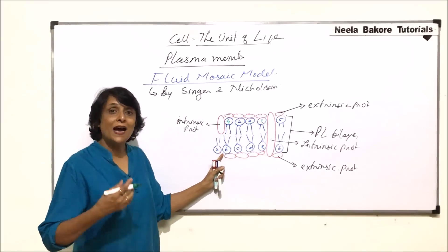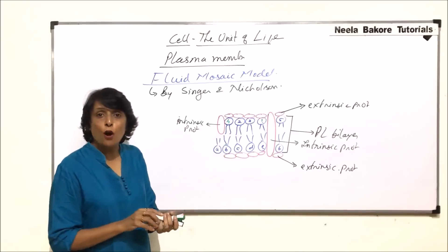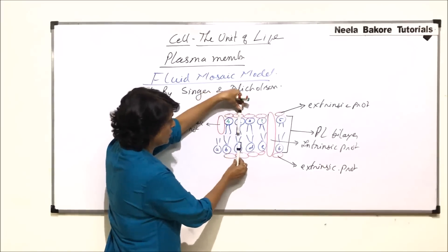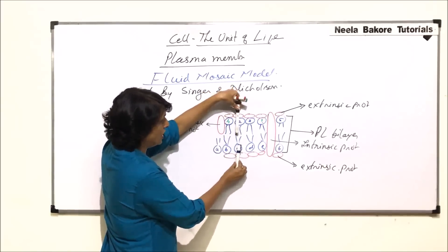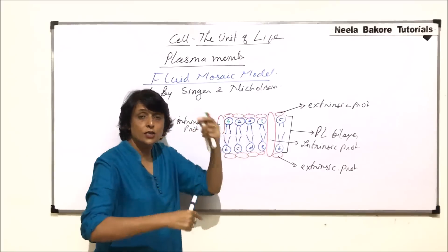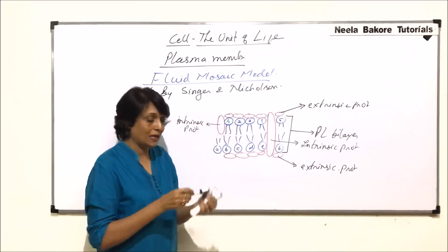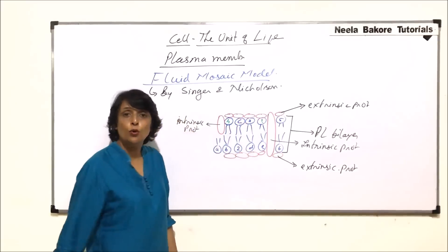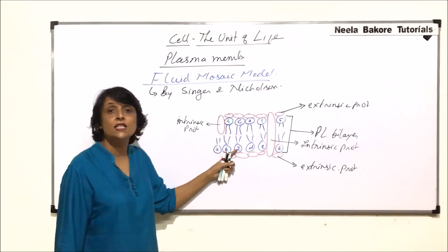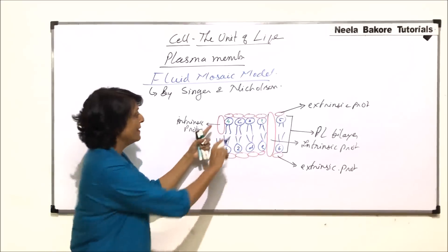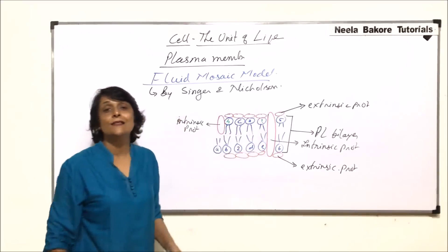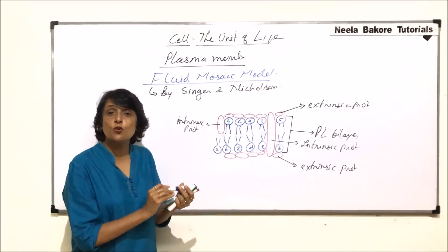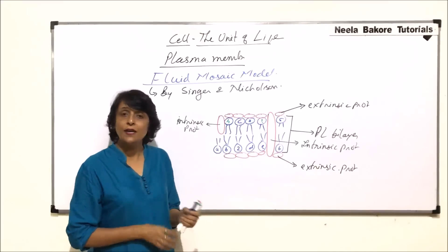If we are talking of the other type of movement, that is flip-flop. In flip-flop the particles move like this. Suppose it is two and c. So c goes here and two comes here. There is a change or movement between the two layers. This is flip-flop movement, whereas this movement is transition movement. These are the two types of movements shown by phospholipid molecules.